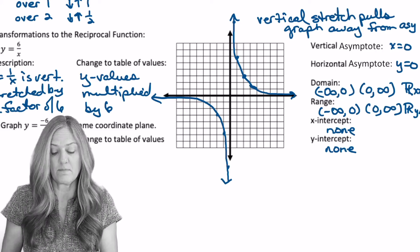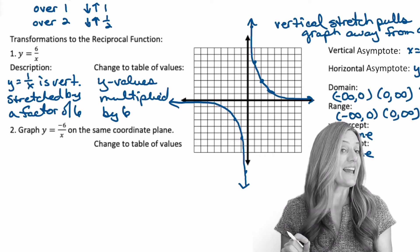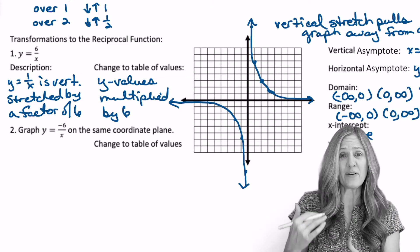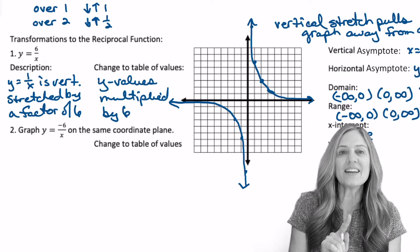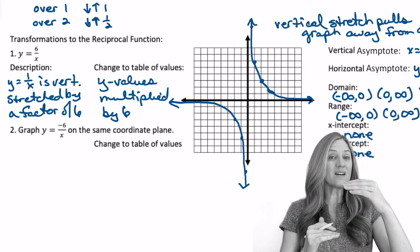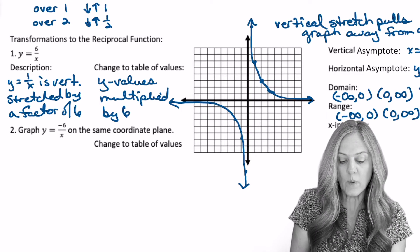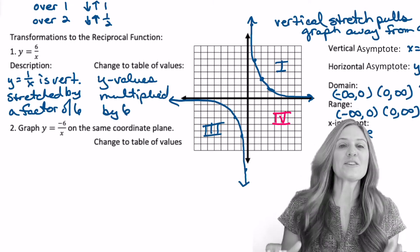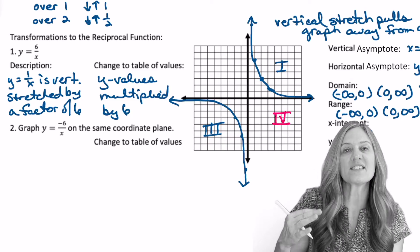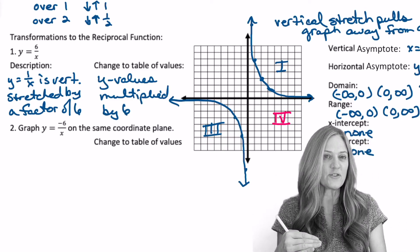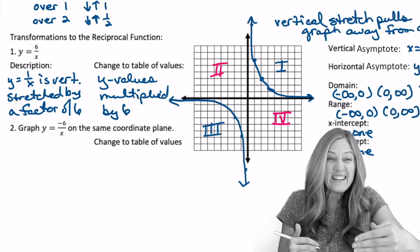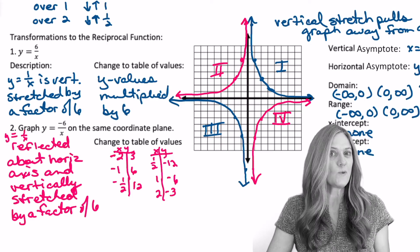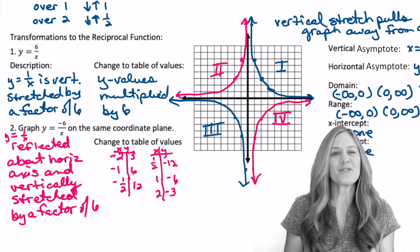On the same coordinate plane, we're going to graph y equals negative 6 divided by x. What do you think is going to happen now? Well, we'll still multiply the y values by 6. However, negative, that's a reflection about the horizontal axis. So currently, just to emphasize, we have the reciprocal function graphed in quadrants 1 and 3. As we reflect across the horizontal axis, the portion that's in the first quadrant will reflect into the fourth quadrant, and the portion in the third quadrant will reflect up into the second quadrant. Have the characteristics of the graph changed? Vertical horizontal asymptote? XY intercepts? Domain range? No, those stayed the same.